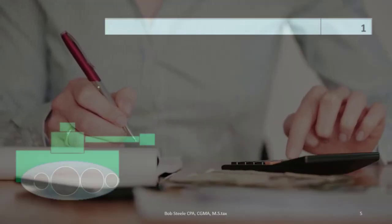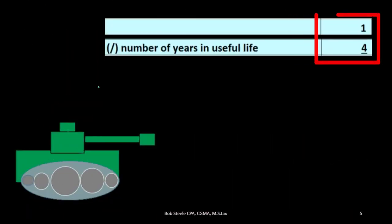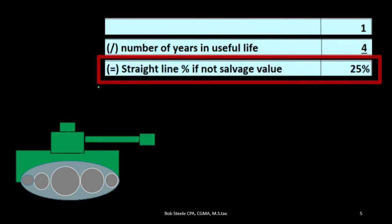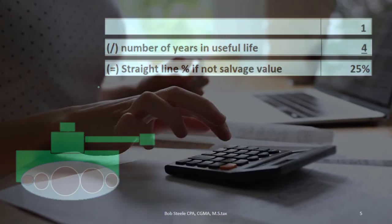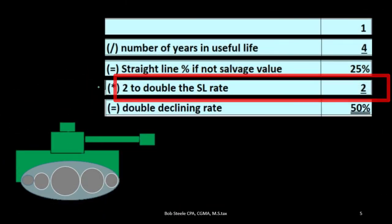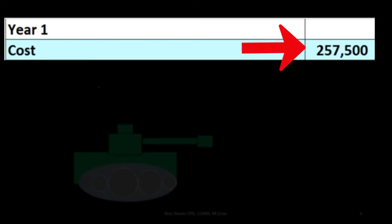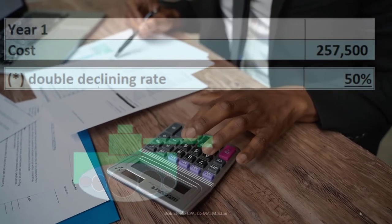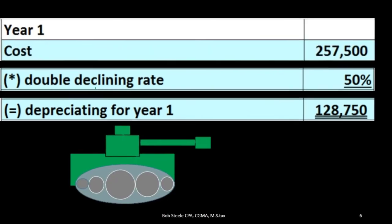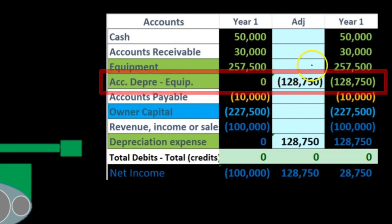We can compare an accelerated method to that baseline — for example, the double declining balance method. We take 1 divided by 4 years, giving us a 25% straight-line rate not accounting for salvage value. For the double declining method, we multiply that rate by two, giving us a 50% double declining rate. Applying that to the cost of $257,500 gives us depreciation in year one of $128,750, which results in a much larger accumulated depreciation in the early years and a lower book value.